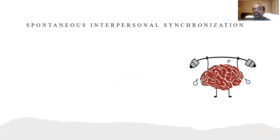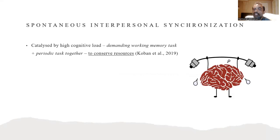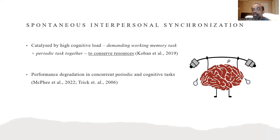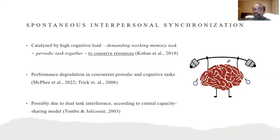One more thing we considered that could be in play here was cognitive load. Coburn and colleagues actually predict spontaneous interpersonal synchronization to increase under high cognitive load in order to conserve resources. This prediction is supported by the fact that in dual task paradigms involving a periodic task and a cognitive task, both tasks actually suffer performance degradation. This is possibly due to dual task interference, according to the central capacity sharing model. We therefore decided to test this prediction by Coburn and colleagues on spontaneous intrapersonal synchronization.